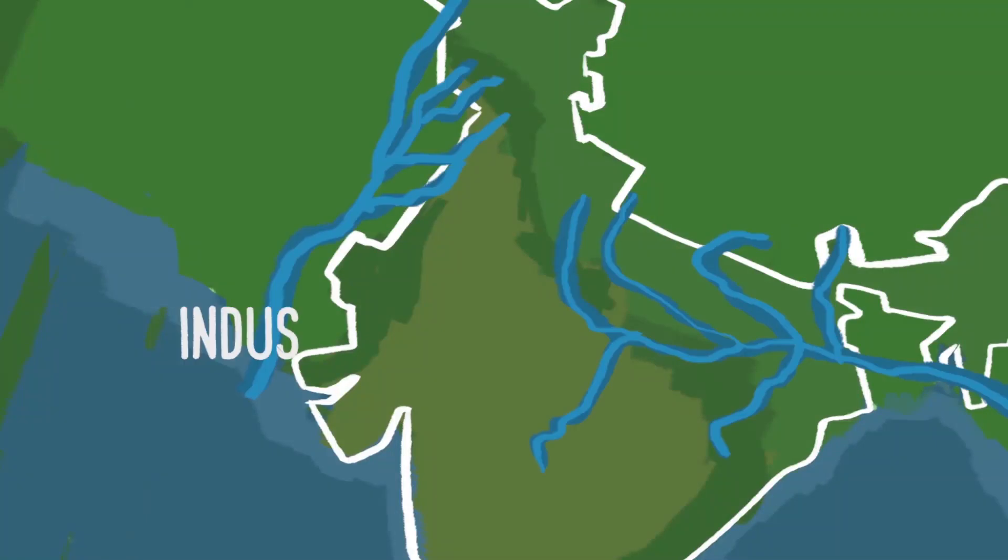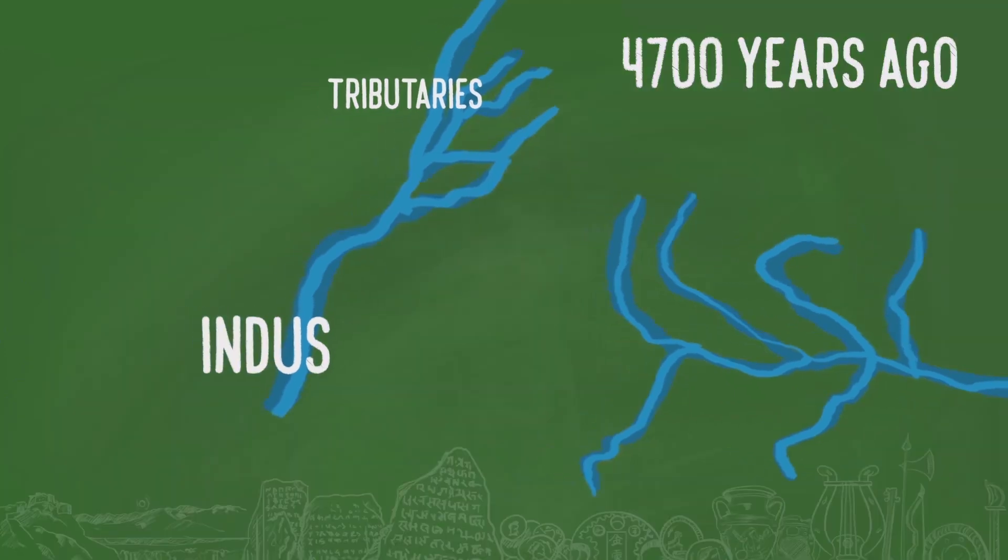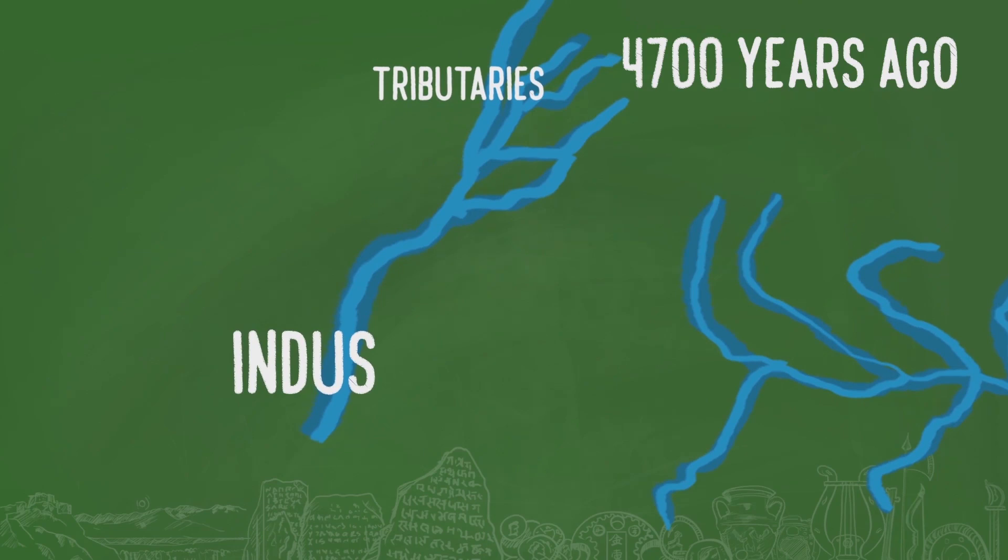You can see the river Indus and its tributaries. Tributaries are small rivers that join big rivers. About 4700 years ago, some of the earliest cities flourished on the banks of these rivers.